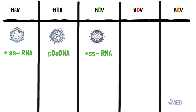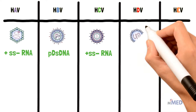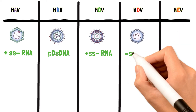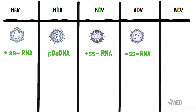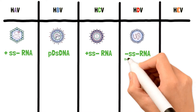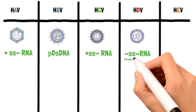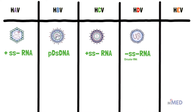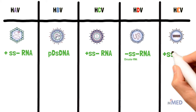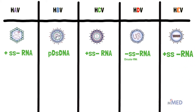Hepatitis D virus has a negative sense single-stranded RNA molecule, and we call this a circular RNA. Hepatitis E virus is similar to Hepatitis A and Hepatitis C viruses — it also has a positive single-stranded RNA molecule.